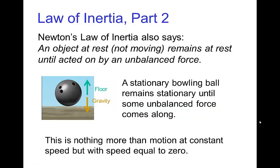Now Newton's Law of Inertia also says that an object at rest — and by at rest we mean it's not moving, not that it's relaxed or taking vacation — but an object that's not moving remains at rest until acted on by an unbalanced force. So, talking about the bowling ball again, if it's just sitting there on the floor stationary, it will remain stationary until some unbalanced force comes along like someone kicks it. This is really just a special case of what we saw in part one, where this is uniform motion when the speed happens to be zero, but it's important enough that it's worth pointing out.